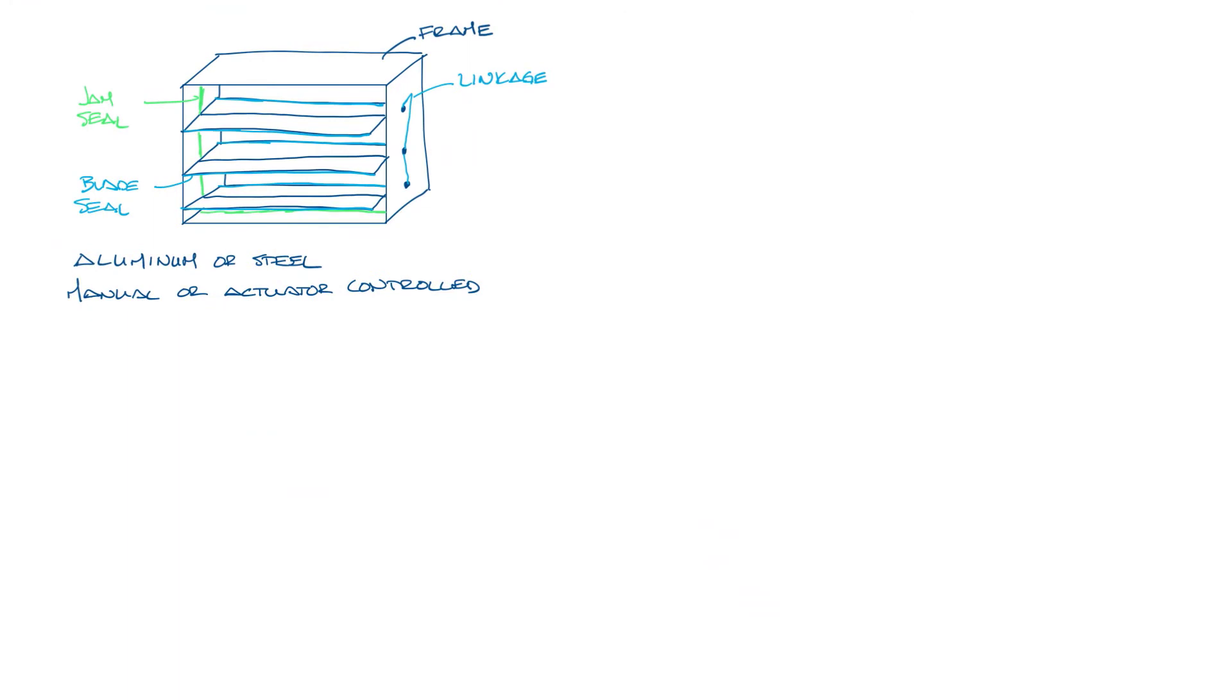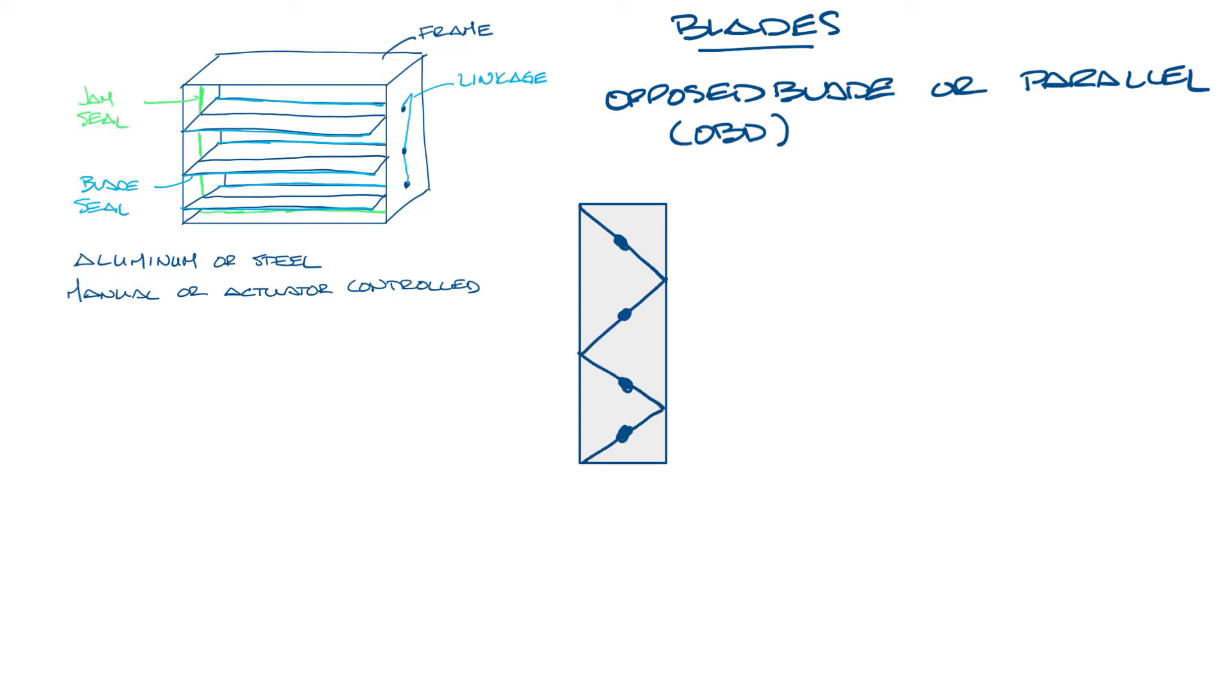Let's move this out of the way. Dampers can be opposed blade or parallel blade design. Opposed blade dampers, also known as OBDs, have blades that open and close in opposition to each other like this. The benefit to this is that the airflow leaves the damper in pretty much a straight and uniform distribution. So if you need uniform airflow like maybe over an electric heater, OBDs are a good choice. OBDs can also be a little quieter in partial open situations.